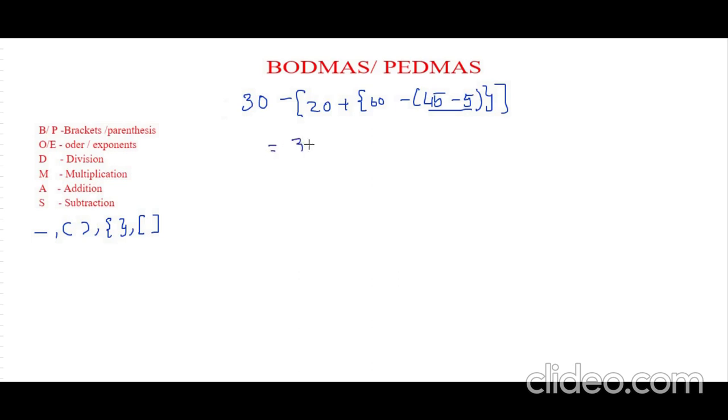So this equation would be 30 minus 20 plus 60 minus, so 45 minus 5 is 40. So others all would remain the same. Only which is inside the brackets we are going to solve.